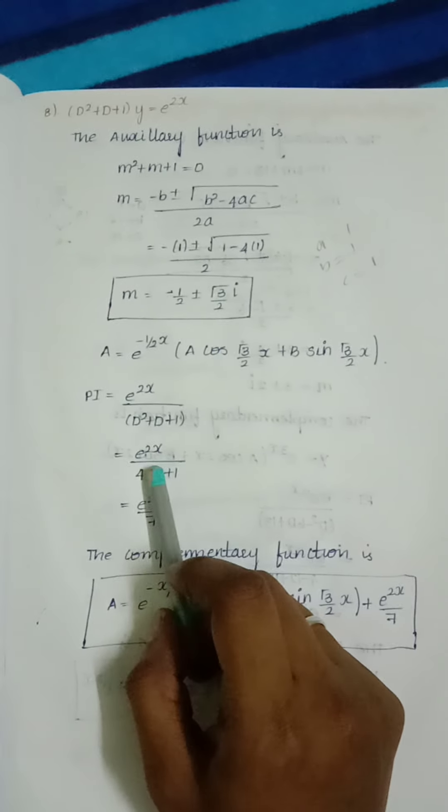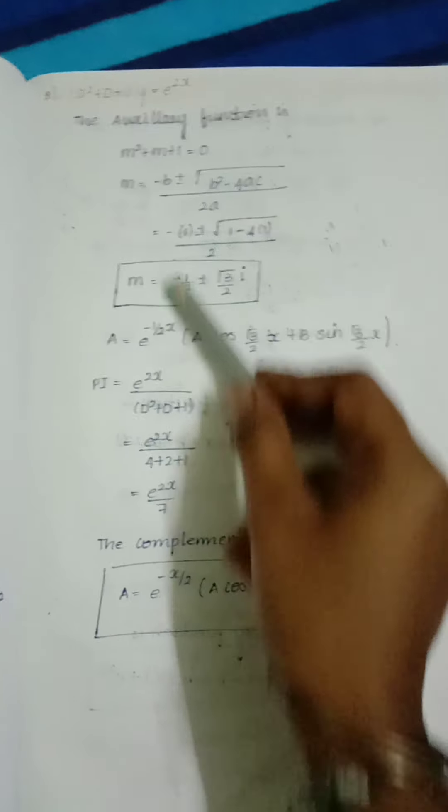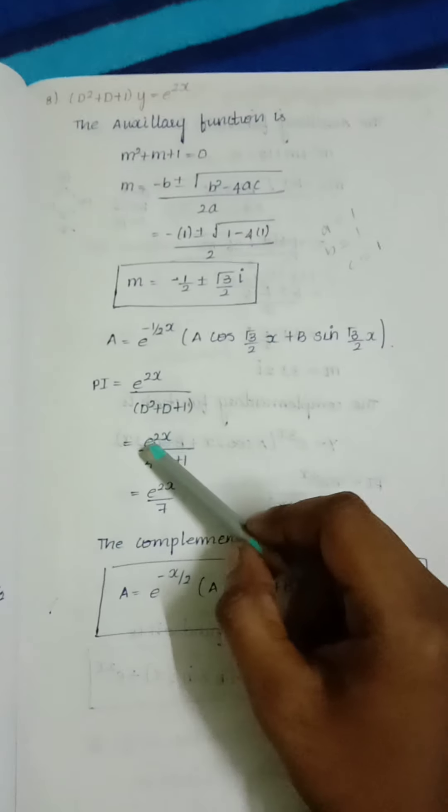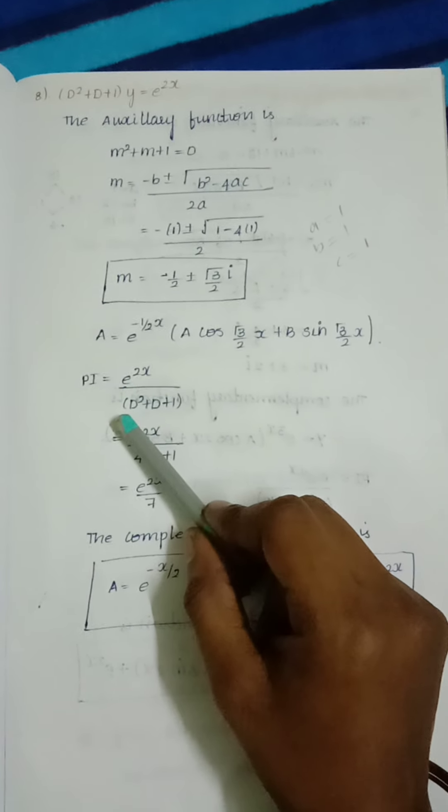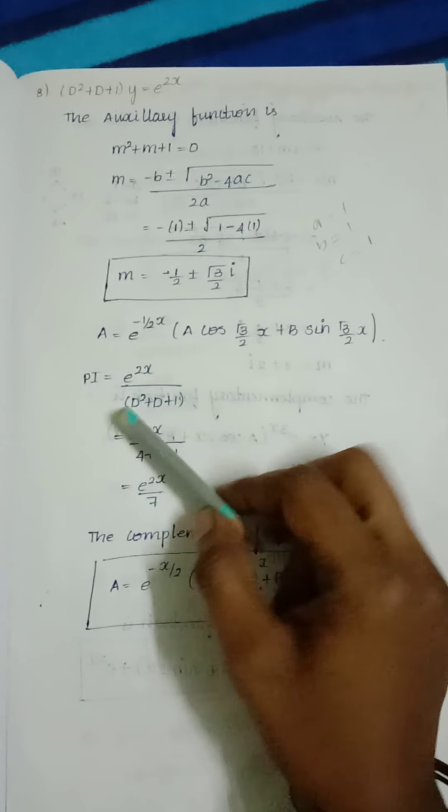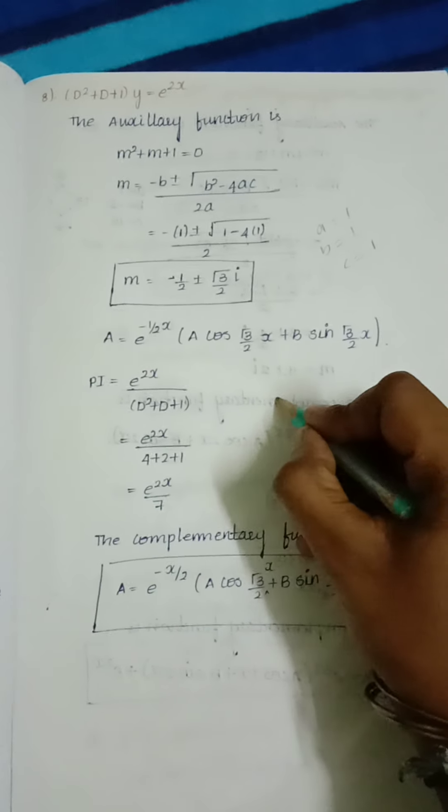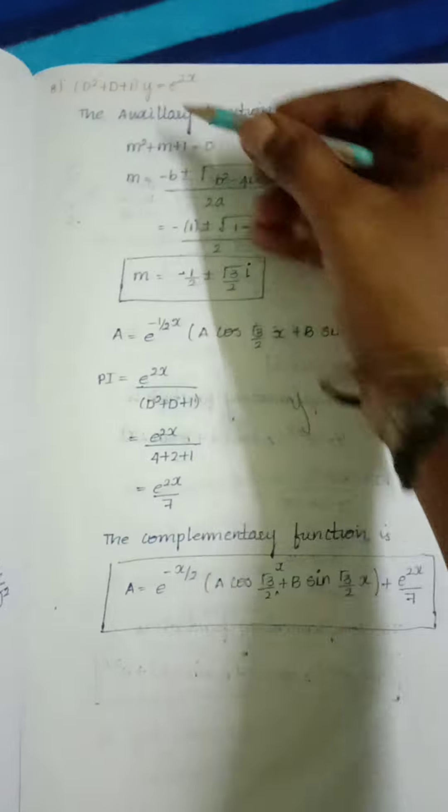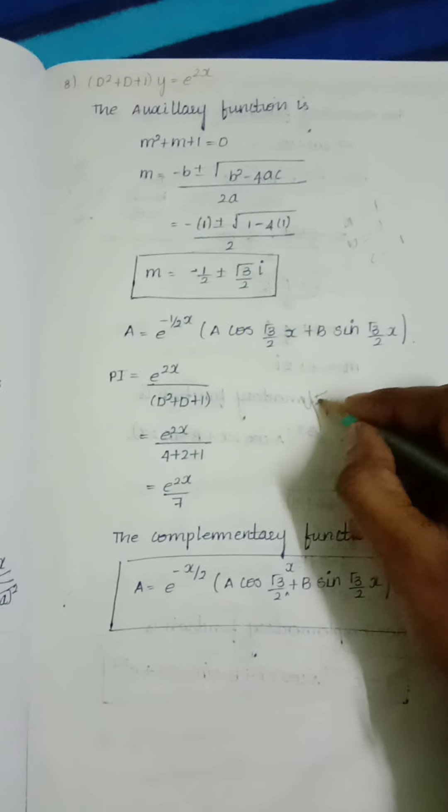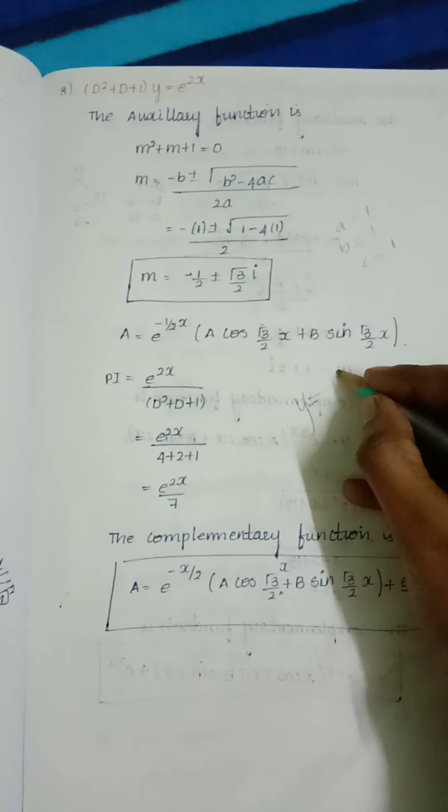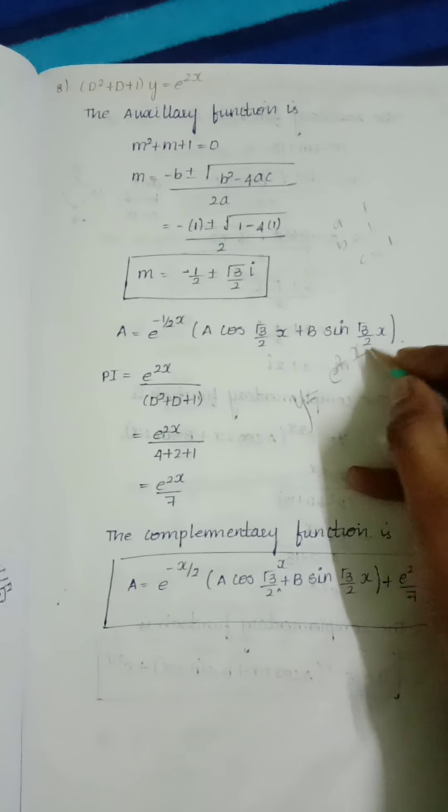Now we want to find the term after equal, so we use the particular integral method. If we use particular integral, we take y from the left side. The right hand side term is e^(2x) divided by D² + D + 1.